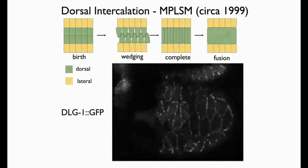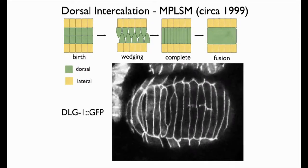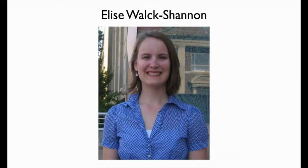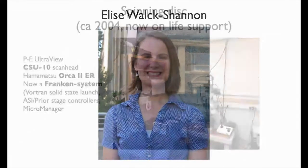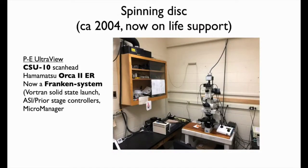Around the turn of the millennium, a great student named Elise Walkshannon in my lab decided to work on intercalation. In 2004 we acquired a Perkin-Elmer UltraView spinning disk system with a CSU-10 scan head, a Hamamatsu Orca 2ER — it's now kind of a Franken system controlled using Micromanager with a Vortran solid-state laser launch. It works, still works believe it or not, but it's pretty primitive by modern standards.